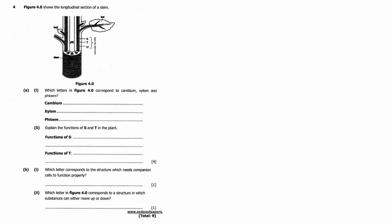All right, so let's begin. Which letter in Figure 4.0 corresponds to cambium? Now this picture is not too clear, but what you need to keep in mind is that the xylem is the innermost part of the vascular bundle, then the phloem is the outermost part, then in between the xylem and the phloem we have the cambium.